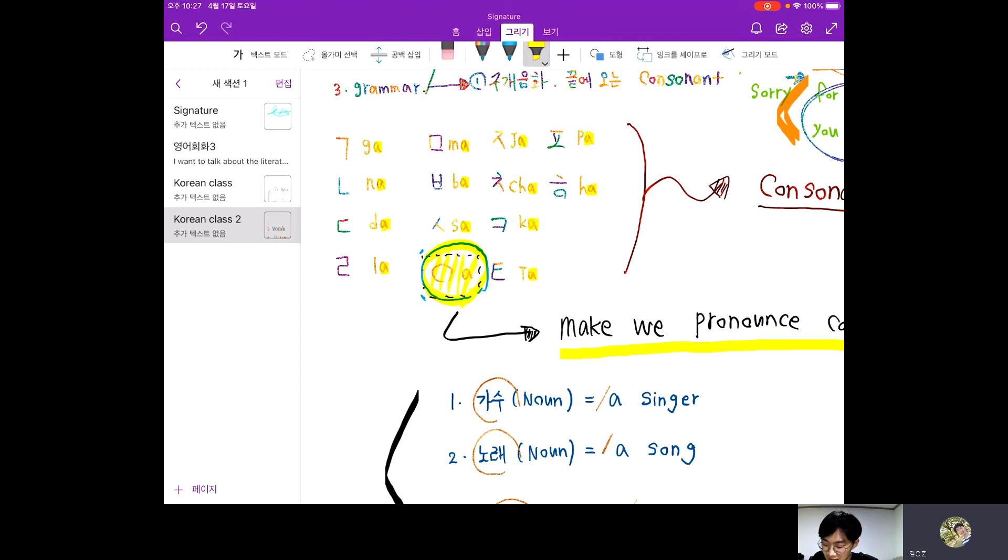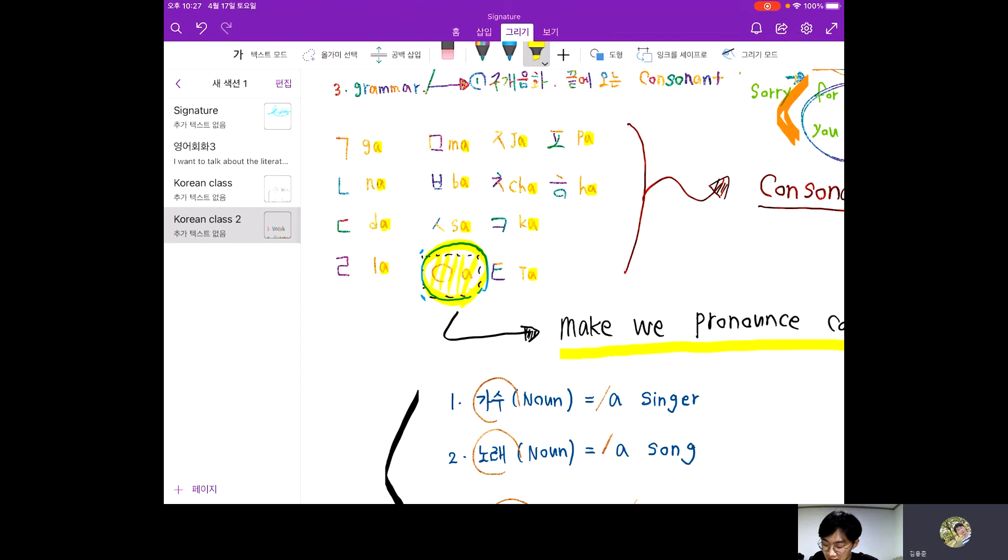It's Korean alphabet of consonant. 가, 나, 다, 라, 마, 바, 사, 자, 자, 가, 다, 바, 하. Okay.